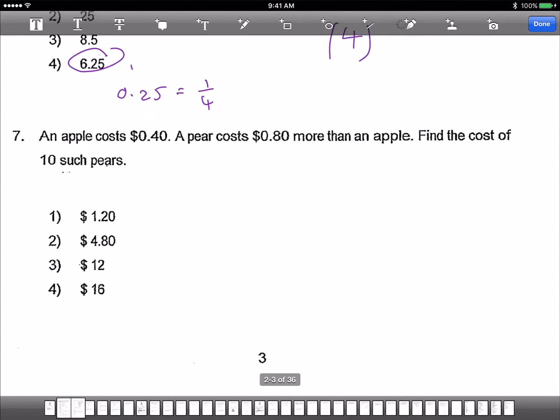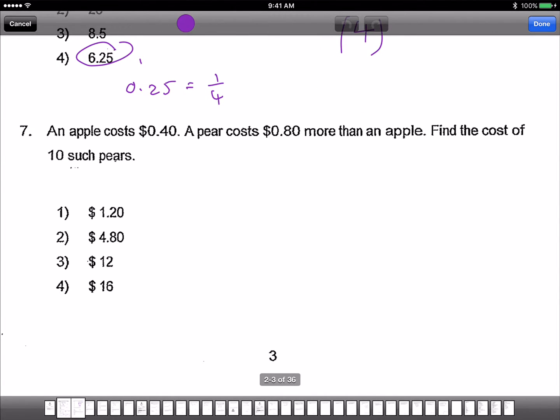Next, an apple costs $0.40, a pear costs $0.80 more than an apple. Find the cost of 10 such pears. So apple $0.40, so the pear would be $1.20. So times 10 equals to 12. The answer is 3.